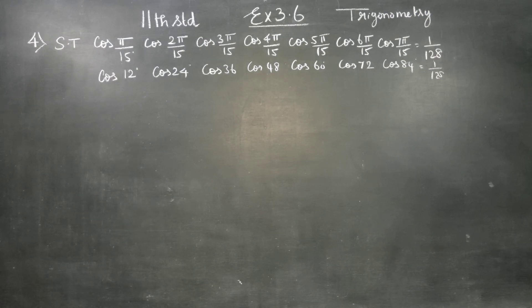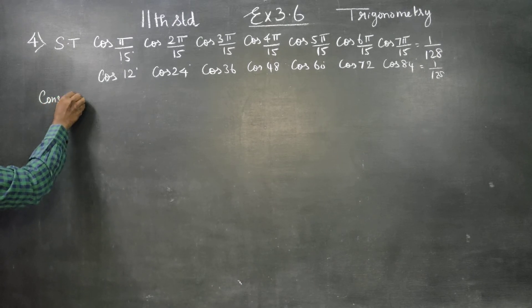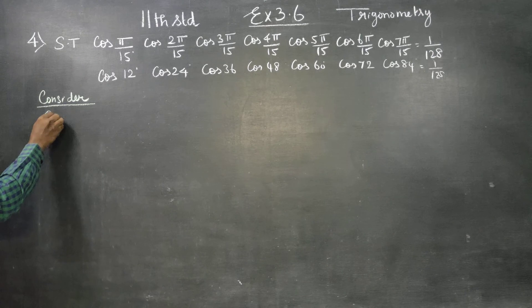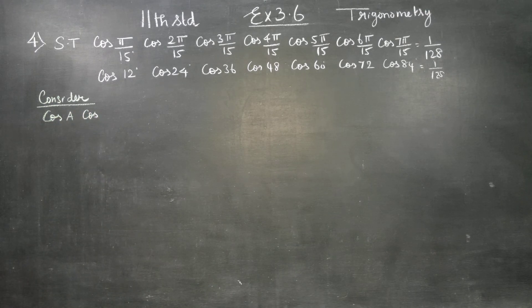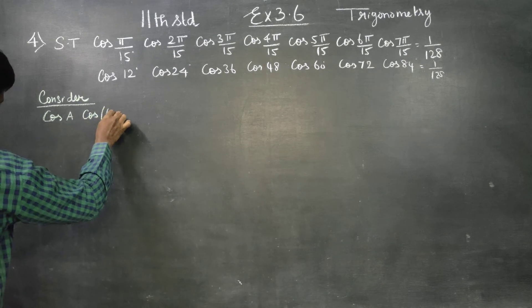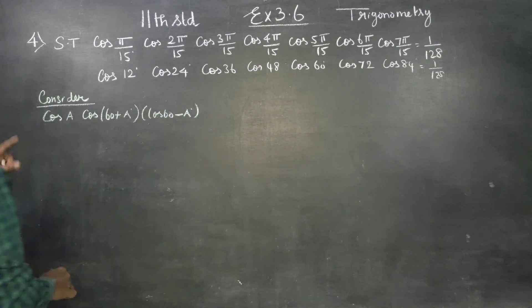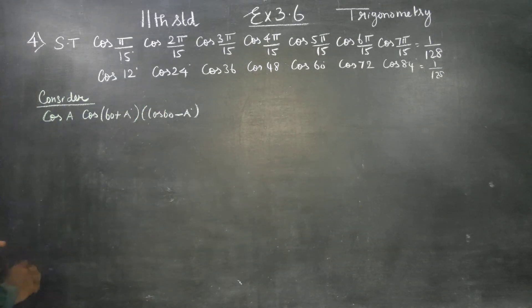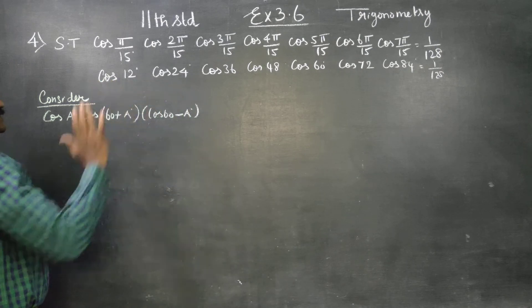Before working on the sum, this is the derivation — one popup, n popup. Consider cos(a), consider cos(a) with three terms: cos(a), cos(60° + a), cos(60° − a). We are going to use 60 degrees.